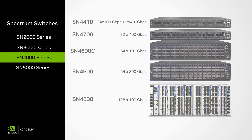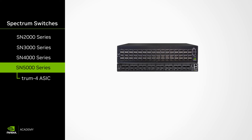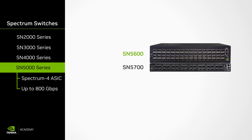The last series we'll discuss is the SN5000 series. These switches use Spectrum 4 ASICs and can operate at rates of up to 800 Gigabits Ethernet. These are the SN5600, which includes 64 OSFP port connectors, and the SN5700, which includes 32 OSFP port connectors. Each 800 Gigabits Ethernet OSFP port can be split into two 400 Gigabit Ethernet ports, further increasing scalability.